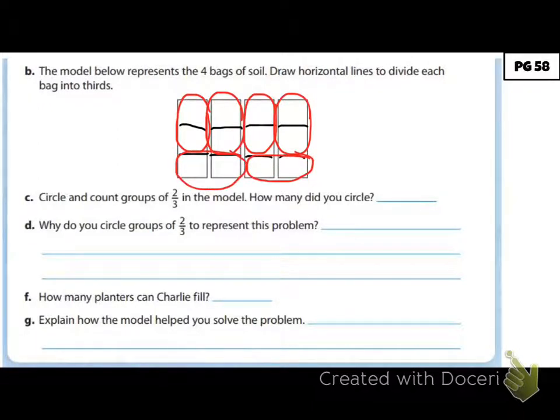So you need to go through and count how many two-thirds there are. One, two, three, four, five, six. How many did you circle? We circled six.